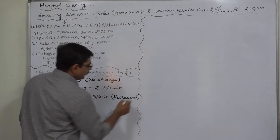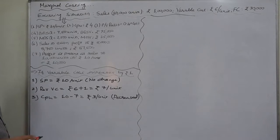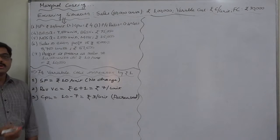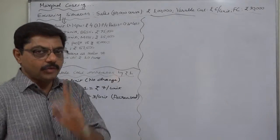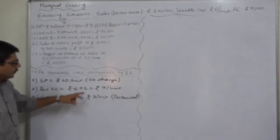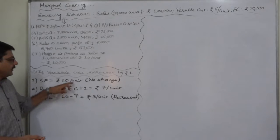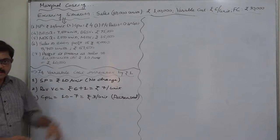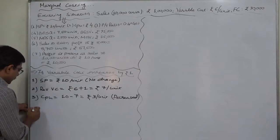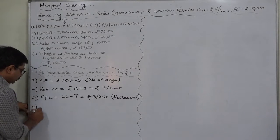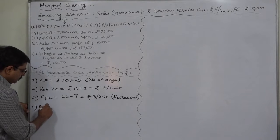This is the first effect of increase in variable cost: the contribution per unit decreases. That means the overall profitability of the firm has decreased because we have not changed our selling price according to the change in variable cost. Now the PV ratio will also change. Revised PV ratio will be now